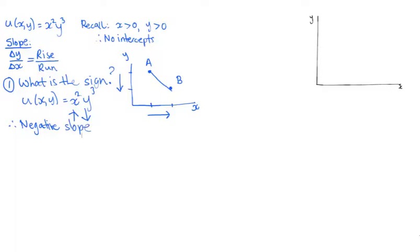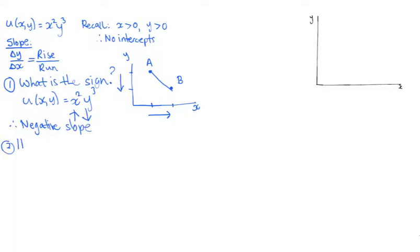Once we know the sign of the slope, we need to consider what is the curvature of this slope? How does that curve change as x increases? Once again, we know that change in y over change in x is the slope. And because we have the utility here, we can actually get to this change of y over change of x through taking the utility function.